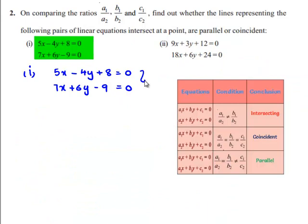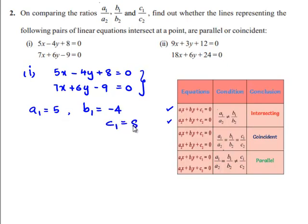On comparing the given equations with the standard form a1x plus b1y plus c1 equals 0 and a2x plus b2y plus c2 equals 0, we get a1 equals 5, b1 equals minus 4, c1 equals 8, and a2 equals 7, b2 equals 6, c2 equals minus 9.